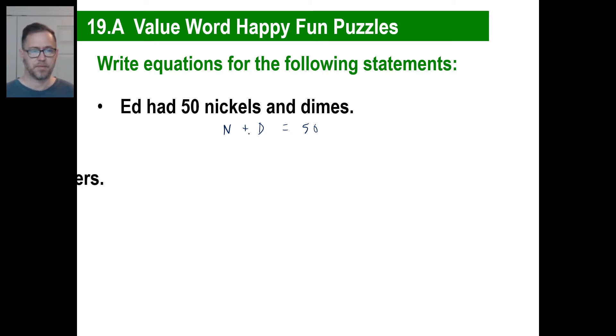Here's another one. Sue sold 27 crabs and lobsters. What's the equation? C plus L is 27, right?